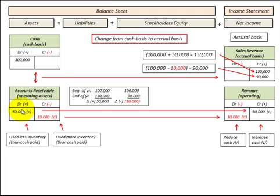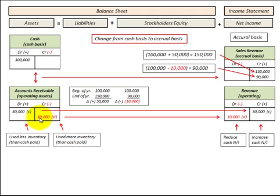Where our accounts receivable increases by fifty thousand dollars for the year, we would recognize an increase in our revenue of fifty thousand for the year. We take this increase of fifty thousand dollars and add it to the cash received of a hundred thousand dollars, so our sales revenue on the accrual basis would be a hundred and fifty thousand dollars.